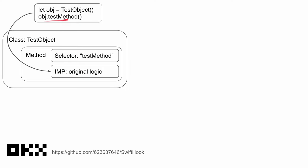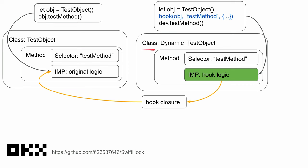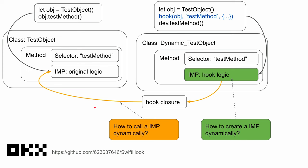This graph shows how it works. Normally when we call a method, it calls the IMP directly. When we do the hook, first we create a new class dynamically — `Dynamic_TestObject` — which has a method with the same selector as the super class, and it has hook logic as its IMP. In this hook logic, we call the hook closure, which is your code. You can decide whether to call the original logic.